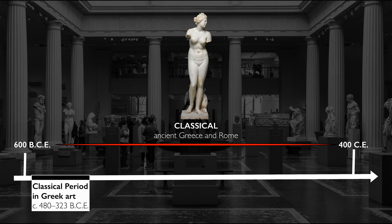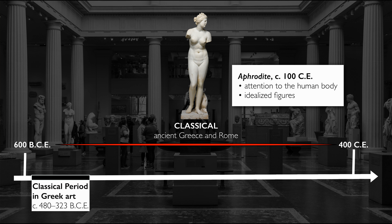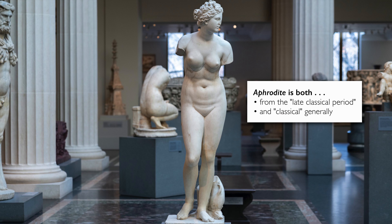These are divisions that are made by art historians in much later time periods. And this Aphrodite is such an exemplar of what comes to mind when we think of the classical. It's clearly informed by careful observation of the human body, although idealized — made better. So although this comes out of a period we would specifically refer to as the late classical in ancient Greece, it is also part of this larger sweeping period that we call the classical, which is a reference to ancient Greece and ancient Rome.